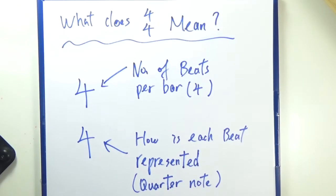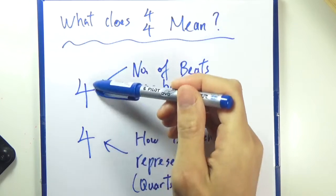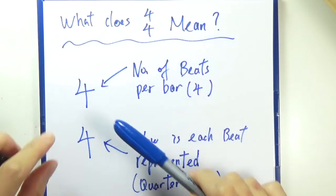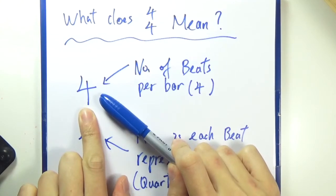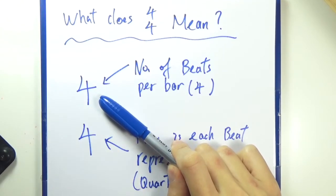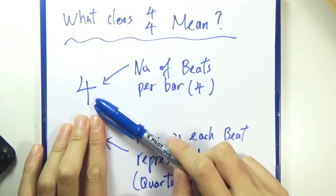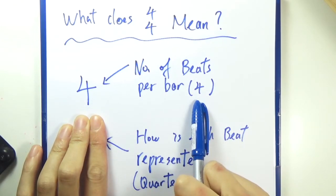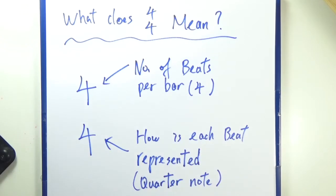Hello everyone, in this video I'm going to talk about what does 4/4 mean. It's actually a key signature, and these two fours mean different things. The upper four is trying to tell you how many beats there are per bar. Since it's the number four, it means there are four beats per bar.